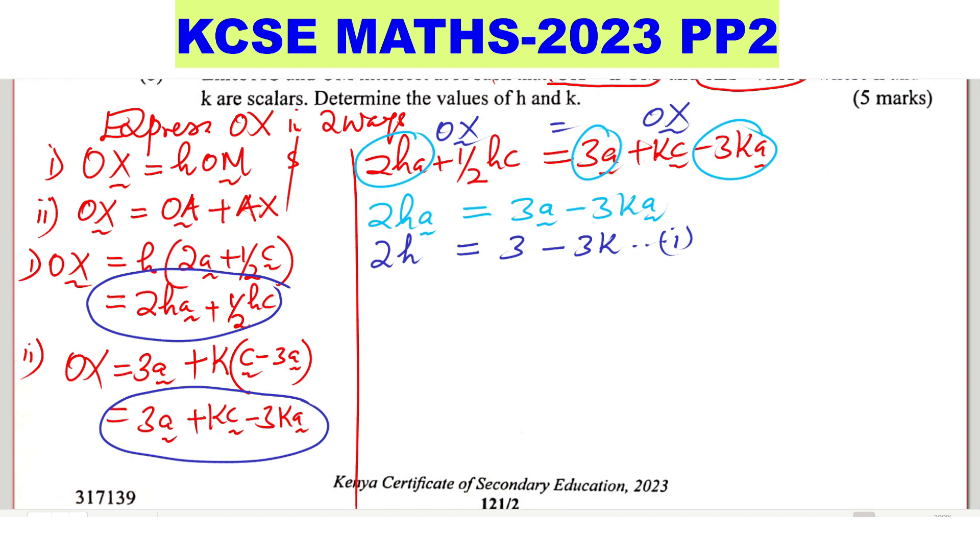Then the other thing you're going to do, pick the terms with vector c. So you have a half hc is equals to kc. Divide each term by c. You'll get a half h is equals to k. And when you multiply both sides to get rid of this denominator 2, multiply each side by 2, you'll get h is equals to 2k. That is another equation.